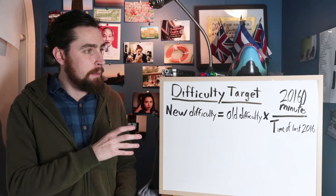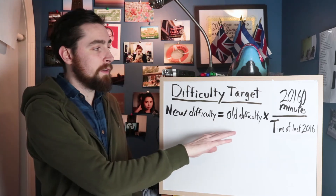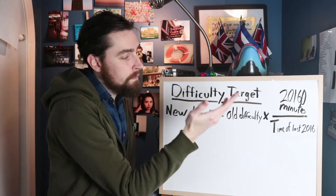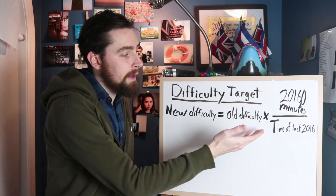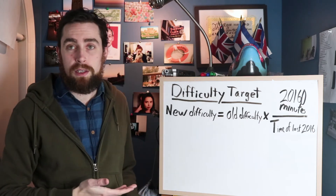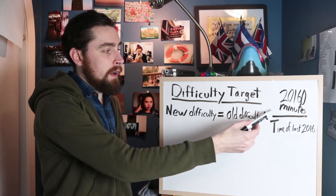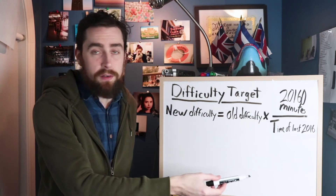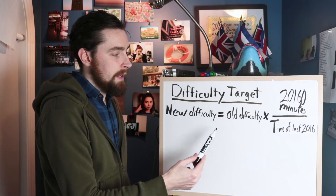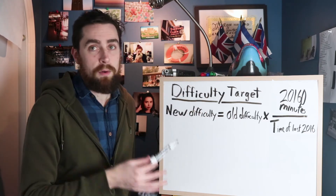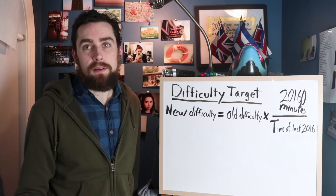Here's roughly the formula the Bitcoin protocol uses to determine what the new difficulty should be: it takes the old difficulty and multiplies it by 20,160 minutes (which is two weeks) divided by the amount of time the last 2016 blocks took to mine. We can clearly see that if it took less than two weeks for the last 2016 blocks to get mined, this results in a number larger than one, which raises the difficulty value and makes it more difficult for miners to solve the cryptographic puzzle, thus maintaining the 10-minute block time.